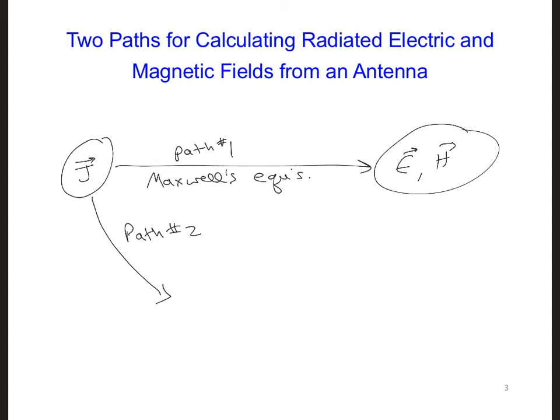So to follow path two, we're going to use what's called a vector magnetic potential A to simplify the analytical calculations. So first we're going to calculate A, and then we're going to use A to calculate E and H.